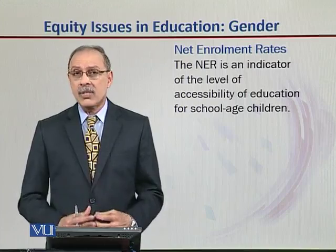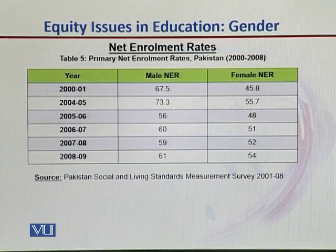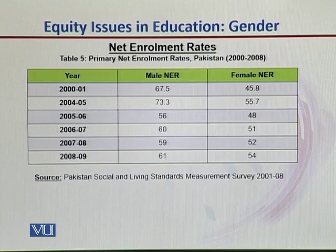Unless we address these issues, this will continue to be a problem in Pakistan's education arena. Looking at the net enrollment rate over the past few years, we can see that the male enrollment rate fluctuates slightly from approximately 68% in 2000-2001 to 61% — about a 7% fluctuation. But look at the female rate: from roughly 46% in 2000-2001 to 54%, it has actually gone up slightly. The male enrollment, unfortunately, has dropped slightly, and there are reasons which we will discuss later in this course.